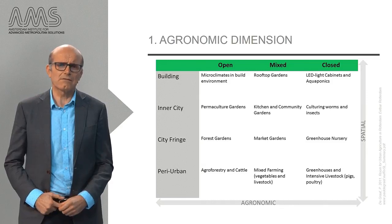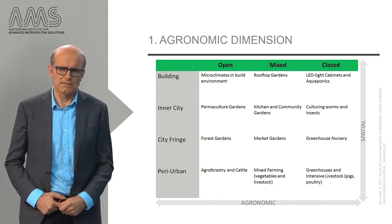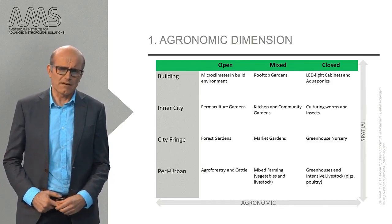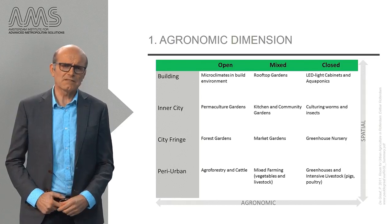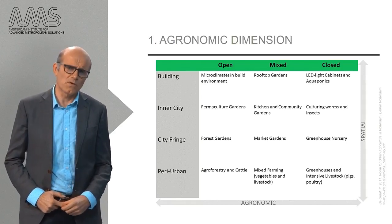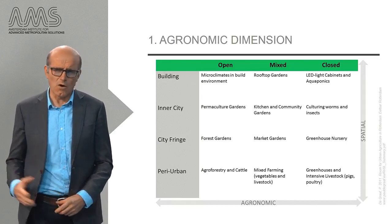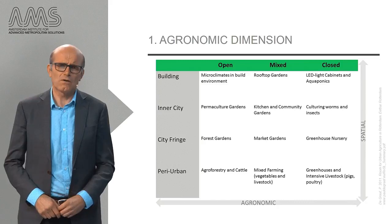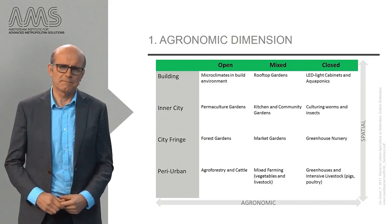First, there is the agronomic or food growing dimension. In terms of agronomy, systems of urban food production can be organized in an open, in a closed or a mixed way.